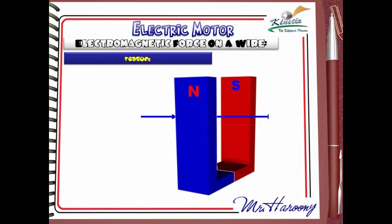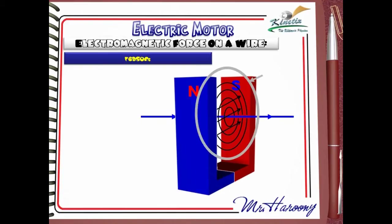We have the two poles of a magnet and a wire. There is a natural magnetic field between the poles of the magnet. For the wire, when current flows, this will generate a magnetic field around it, as we have said before.